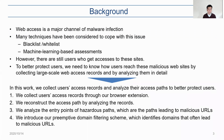Web access is a major channel of malware infection. Many techniques have been considered to cope with this issue, including blacklist, whitelist, and machine learning-based assessment techniques. However, there are still users who get access to these sites. To better protect users, we need to know how users reach these malicious websites by collecting large-scale web access records and analyzing them in detail. In this work, we collect users' access records and analyze their access paths to better protect users.